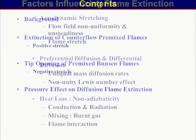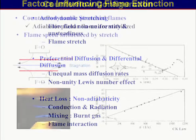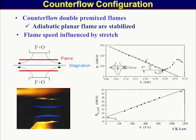Factors influencing flame extinction: one is the aerodynamic stretch by flow field non-uniformity and unsteadiness, typically represented as a flame stretch. Another is preferential diffusion and differential diffusion through unequal mass diffusion rate, or a non-unity Lewis number effect, and heat loss. I will focus on the top two.